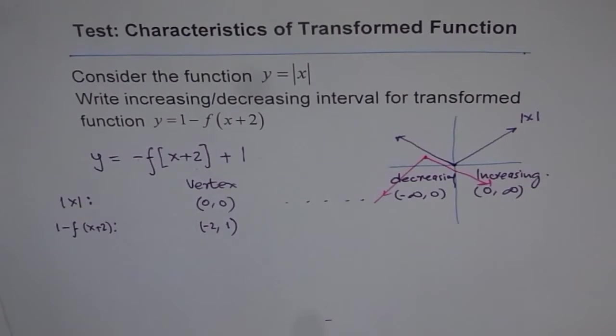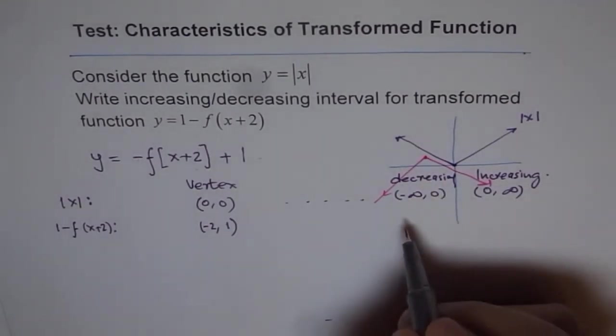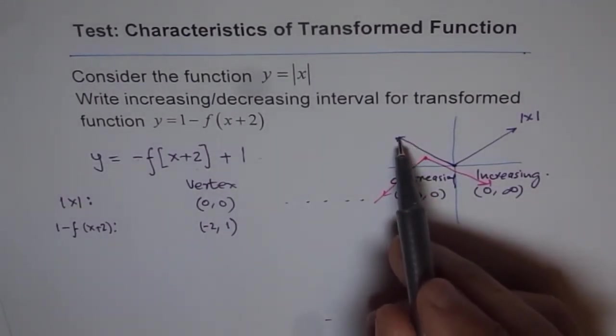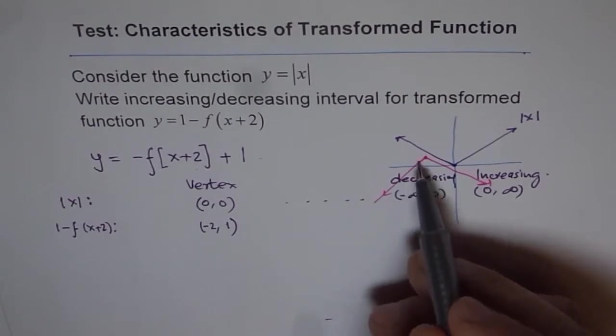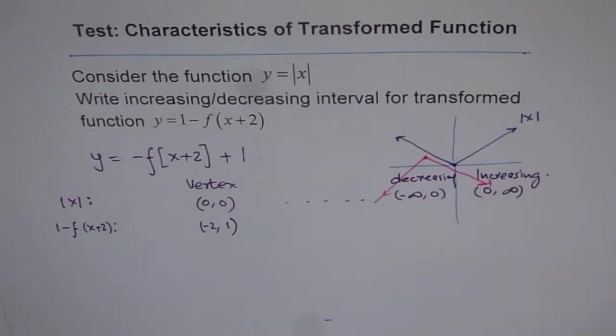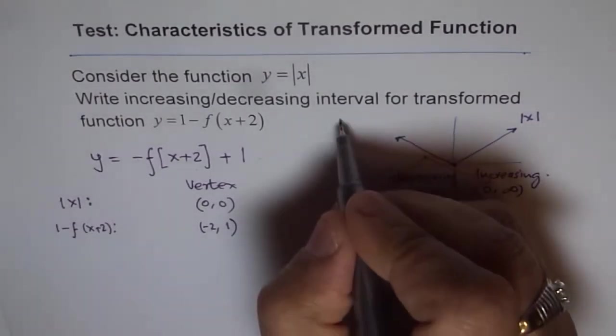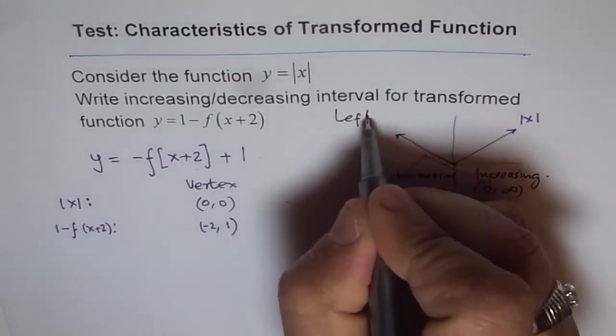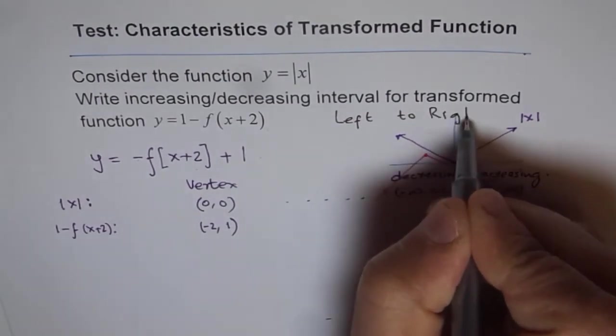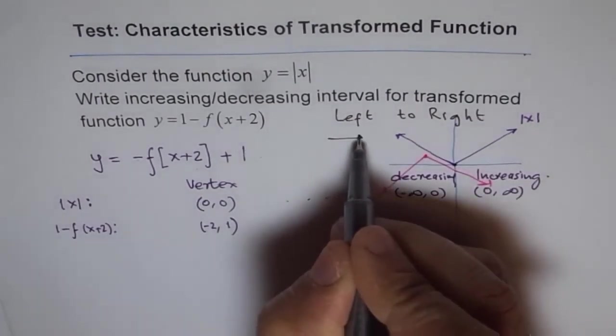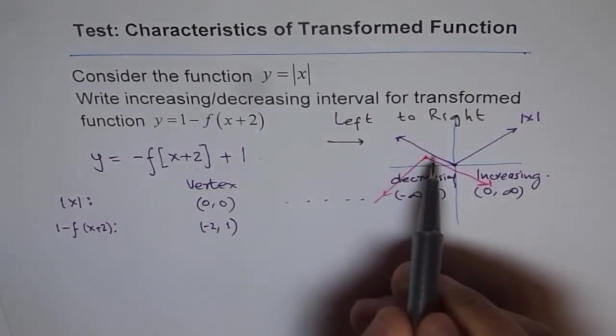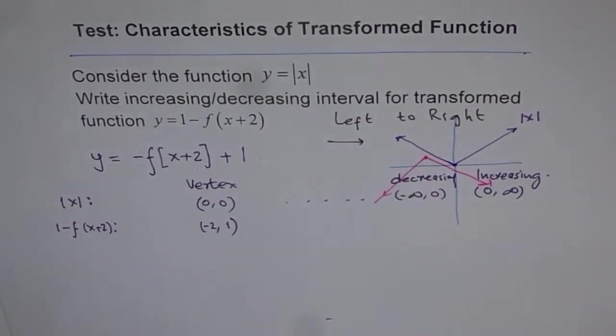So what really happens here is, in transform function, the interval which was decreasing becomes increasing. You have to see from left to right. Always see your function as you go from left to right. So if you go from left to right, you see earlier it was decreasing, now it is increasing. Do you see that?